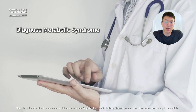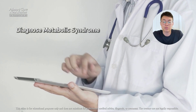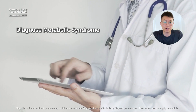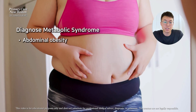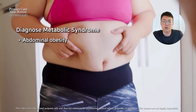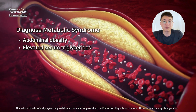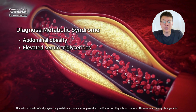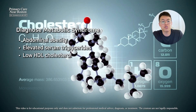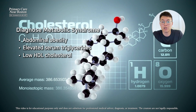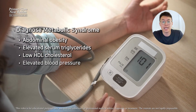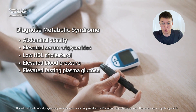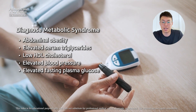To diagnose metabolic syndrome, doctors look for three or more of the following five criteria: abdominal obesity with a large waist circumference, elevated serum triglycerides — high levels of a type of fat in the blood — low HDL cholesterol (the good cholesterol), elevated blood pressure, and elevated fasting plasma glucose, meaning high blood sugar levels after fasting.